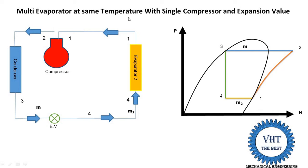We are studying the same temperature case. On the P-h diagram, the same temperature line is drawn vertically on the liquid line, then horizontally in the wet region, then moves downward in the superheated region. So if three, four, or five evaporators are used at the same temperature, only one single line appears for all evaporators.